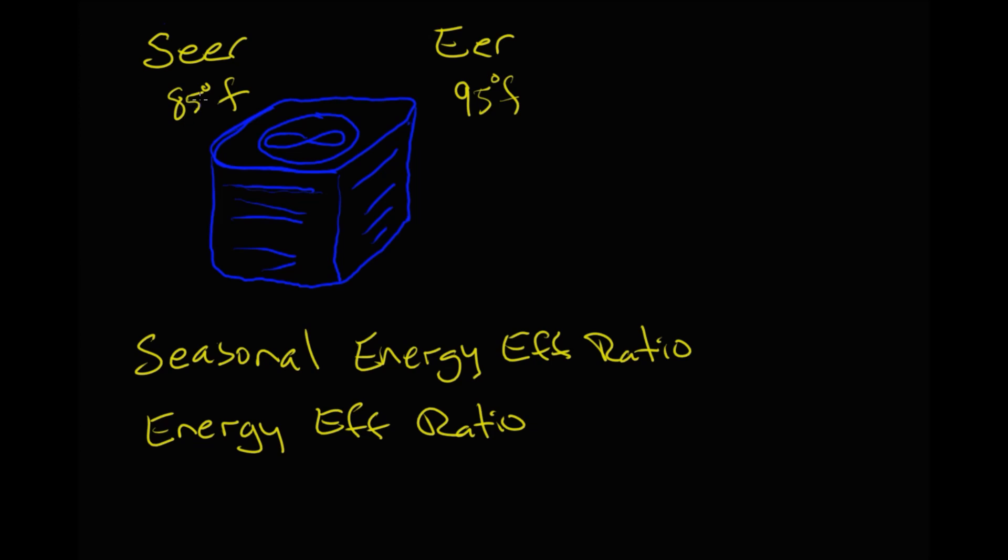So SEER is kind of based on the whole country. What they do is they take the whole country and they say, OK, this is a number we can use across the country because they don't just base it on the EER. Now, the temperature difference, the 95 for the EER, that's more for our area here in California, in the Central Valley. We need a higher EER because we use that rating. That's actually better for us at 95 degrees.